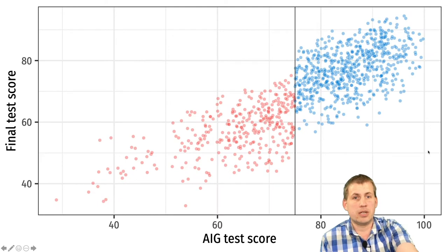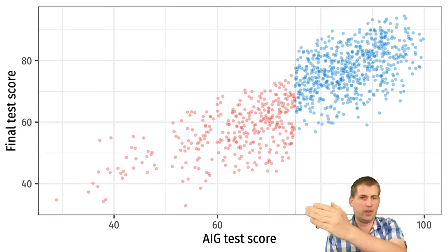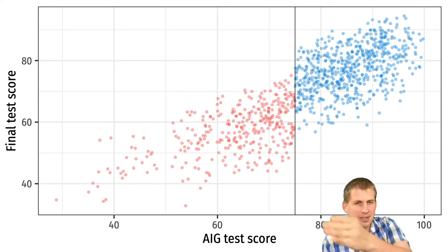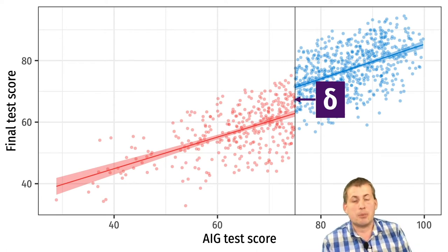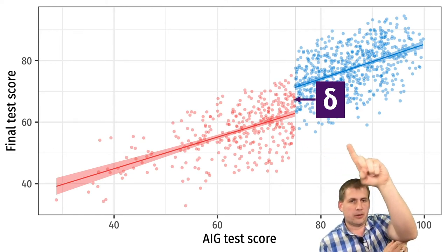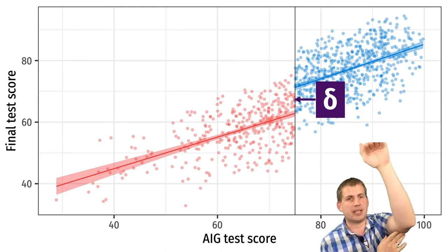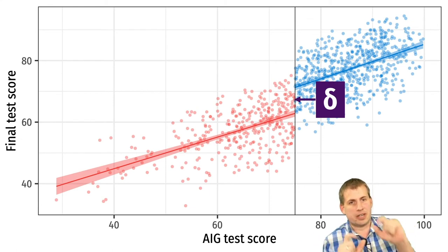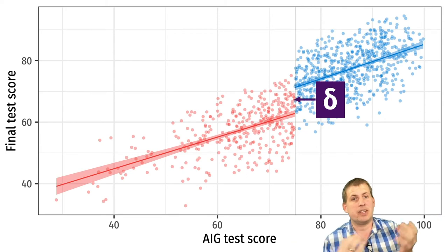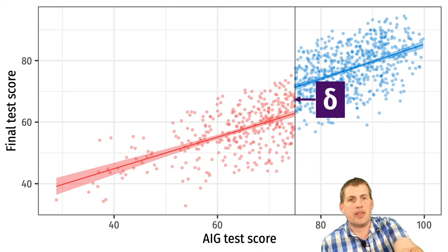Looking at the AIG test scores on the x-axis and the hypothetical end-of-high-school final test score on the y-axis, right at the 75 threshold there is a gap — and that gap is our delta, our treatment effect. We can assume that had the people above 75 not been in the program, they would have continued along the lower line, but because they were in the program they got a boost. That gap is our causal effect — measuring it tells us the causal effect of being in the AIG program on your final test score.